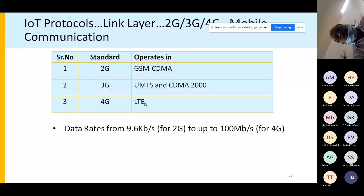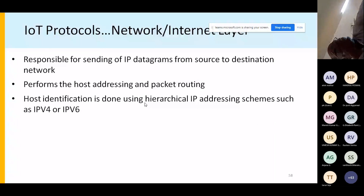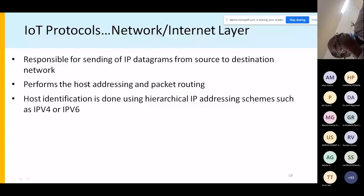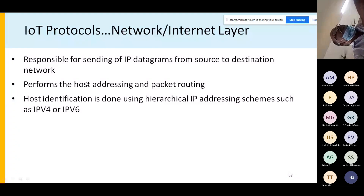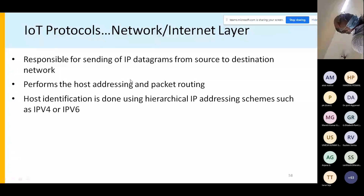At the network and internet layer, IP exists in two versions: IPv4 and IPv6, with tunneling required in some cases. Both technologies co-exist, but the future appears to be moving towards IPv6. The network layer is responsible for sending IP datagrams from source to destination, and performs host addressing and packet routing using hierarchical IP address schemes.